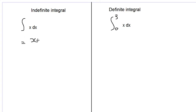So we will have x to the power of 1 plus 1 all over 1 plus 1 plus some constant c that will give us x squared over 2